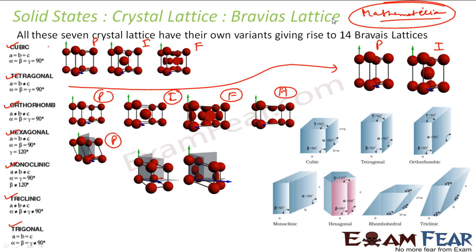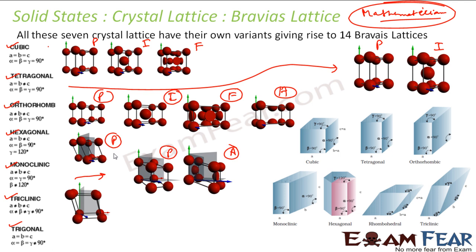We will also do some mathematics around it — we will find the efficiency of this packing. For monoclinic, he found two possible options: the normal primitive, and the base centered. For triclinic, only primitive was possible. For trigonal also, only primitive was possible. These are things he calculated and observed based on examining a lot of crystals.